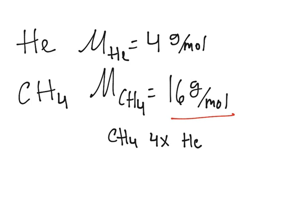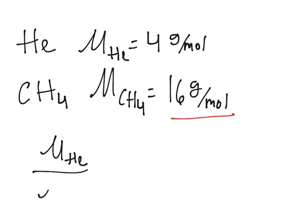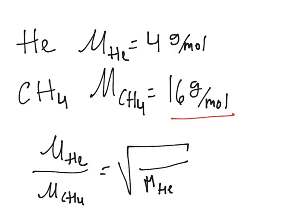We have helium over methane. And it's inversely proportional, so they'll have different orders. We'll write molar mass of helium here and the molar mass of CH4 here. This is supposed to just be a U, like this.